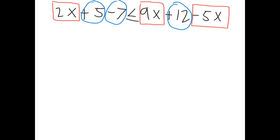We only look at like terms on each side of the inequality sign — combine like terms on the left, then combine like terms on the right. We don't combine between the two sides. The only like terms on the left side are plus five and minus seven.